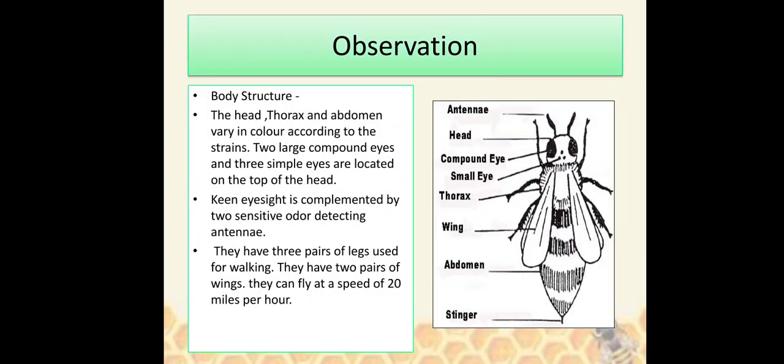Body structure: The head, thorax, and abdomen vary in color according to the strains. Two large compound eyes and three simple eyes are located on the top of the head. Keen eyesight is complemented by two sensitive odor-detecting antennas. They have three pairs of legs used for walking, two pairs of wings, and can fly at a speed of 20 miles per hour.